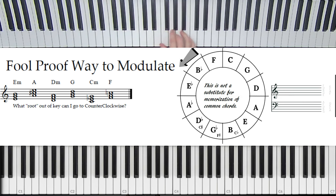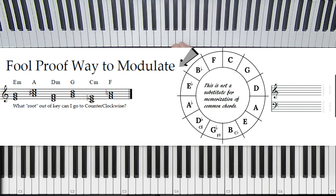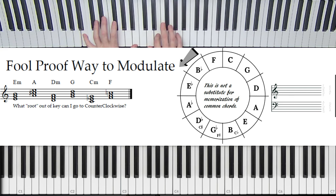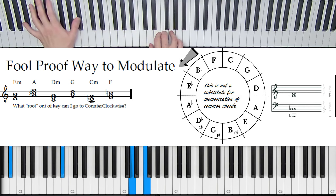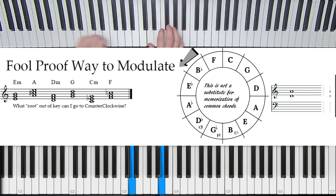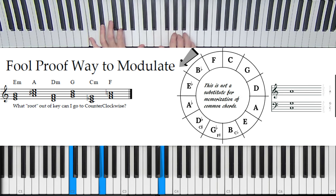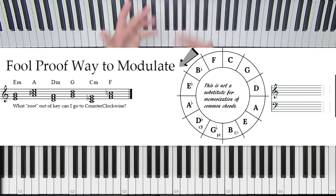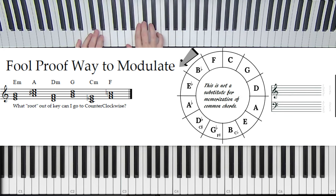I wrote down a little sequence below that you can use. We're going to first go from E minor to F without using this trick — we're going to use common chords. That used a lot more common chords that you would have to memorize. But this particular sequence you don't really have to memorize because you're just looking at the root movement — strong root movement counterclockwise.